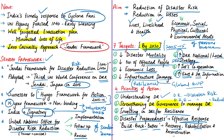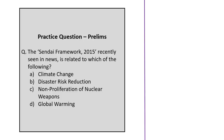The growth of disaster risk means there is a need to strengthen disaster preparedness for response in anticipation of events, and to ensure that capacities are in place for effective response and recovery at all levels. With this, we come to the end of this discussion.